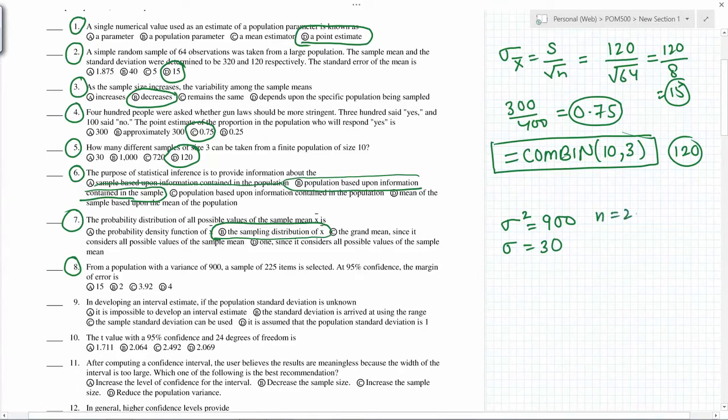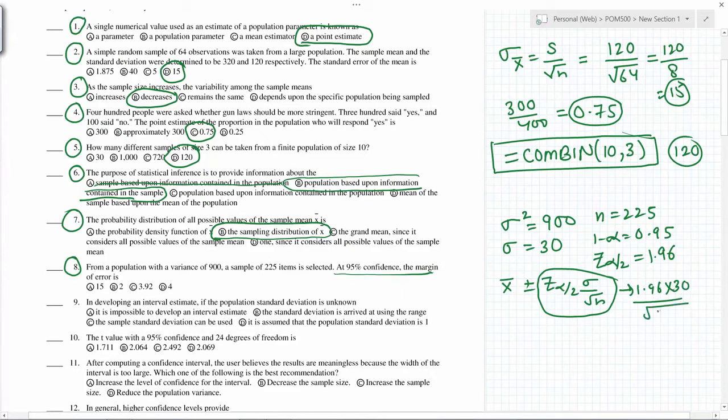The margin of error at 95 percent confidence: 95 percent confidence means 1 minus alpha equals 0.95, and Z alpha by 2 for 0.95 we know is 1.96. So remember the formula is X bar plus minus Z alpha by 2 times sigma over square root of n. This part is called margin of error. If you calculate, this will be 1.96 times 30 divided by square root of 225, so this will give you 3.92.